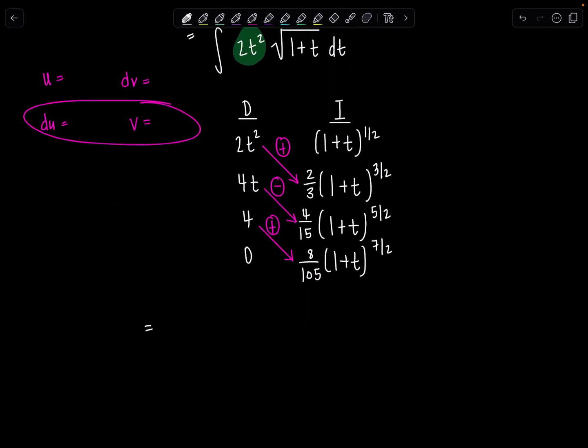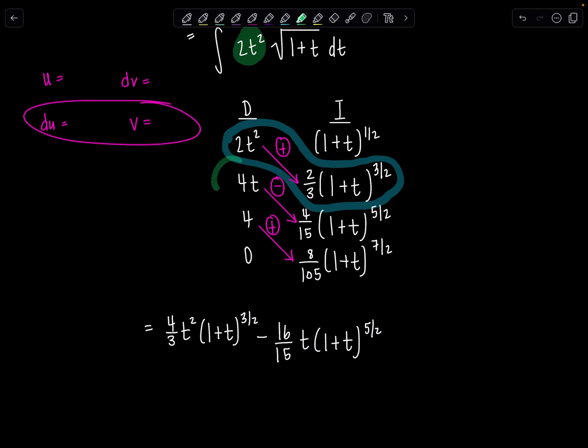2t squared times 2 thirds, I'm going to write that as 4 thirds t squared times 1 plus t to the 3 halves. So we've got this product here first. The next one's going to be minus 16 over 15 t times 1 plus t to the 5 halves. So that's this. And then lastly we have plus 32 over 105, 1 plus t to the 7 halves plus c. So the last one's this product.